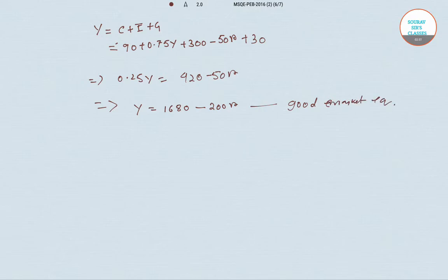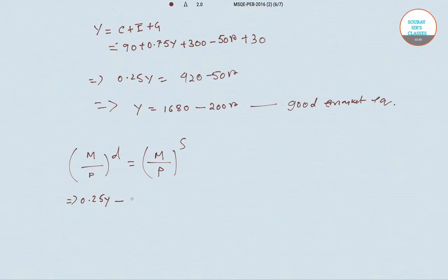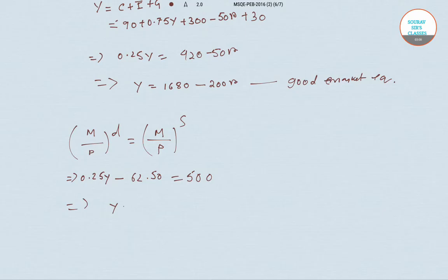Now we find the equilibrium in the money market, where money demand equals money supply. We have 0.25Y minus 62.50r equals 500. Solving for Y, we get Y equals 2000 plus 2500r. This is the LM curve — the money market equilibrium condition.